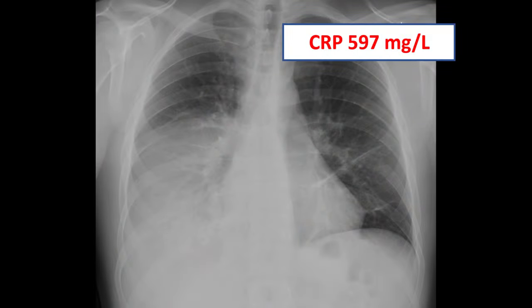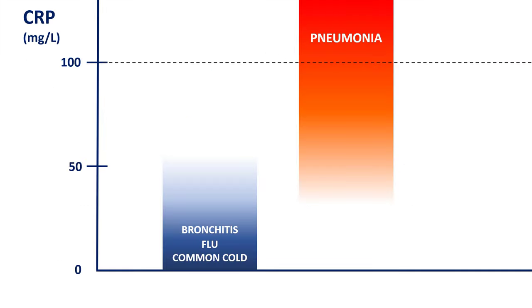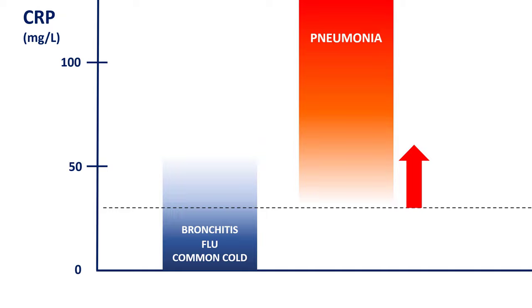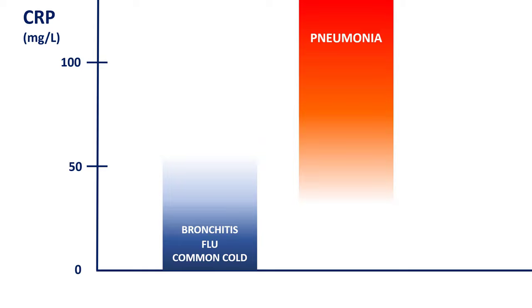The highest I've personally seen was 597 in a patient with Legionnaires' disease. When you look at the studies on this topic, they come up with slightly different numbers. Most agree that CRP above 100 is a sign of bacterial infection, but some move this threshold all the way down to 30. It depends on how the study was designed, but in general, with higher thresholds like 100, you get better specificity but poorer sensitivity for bacterial infections, and for lower thresholds, it's vice versa: better sensitivity but poorer specificity.